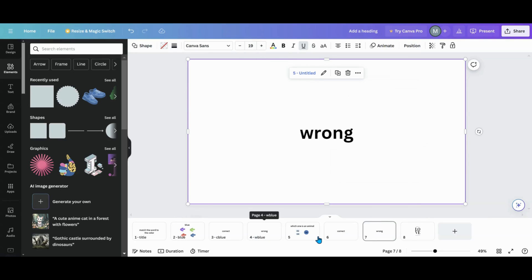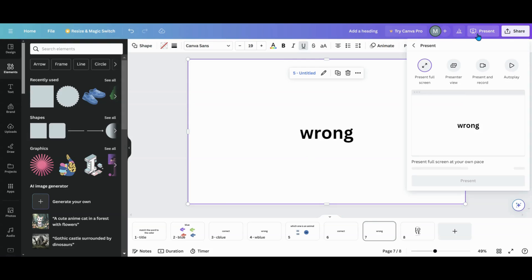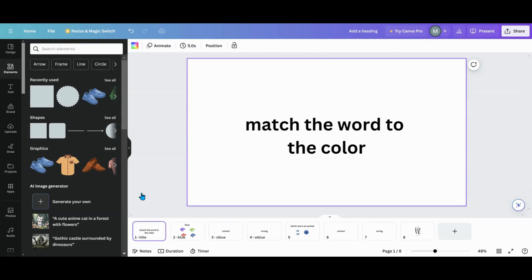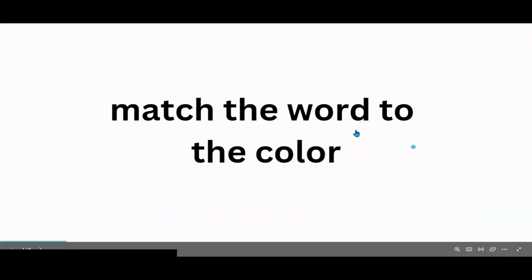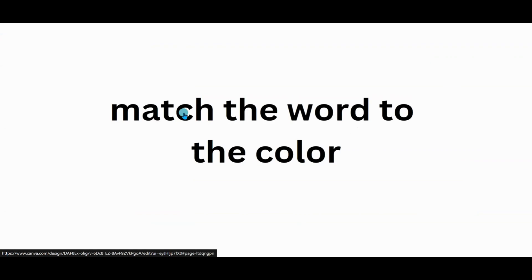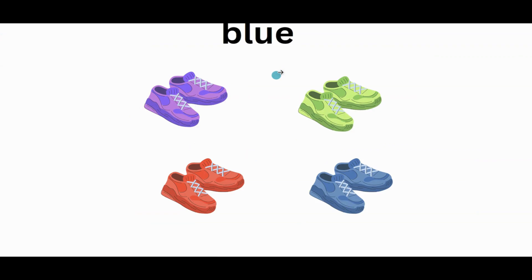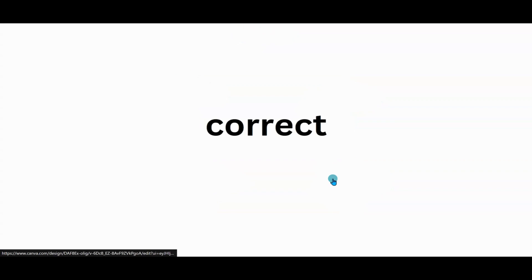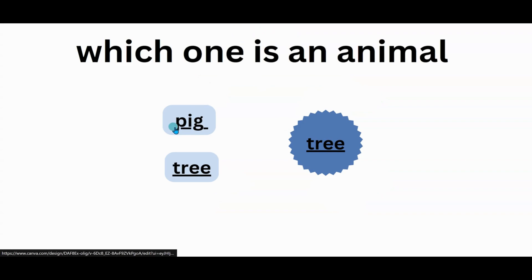Now that you've got everything done and linked together, go into present. Let's hit page one and go into present. Now we're in here — click blue, correct — goes to the next one. Let's try wrong — it goes back. That's wrong, goes back. That's wrong, goes back to that page. That is correct — goes to the next one. Tree is wrong, tree is wrong, pig is right and it took us to page eight.